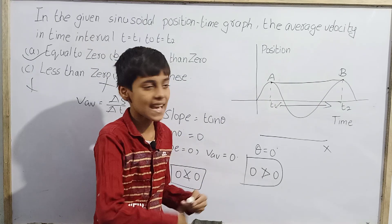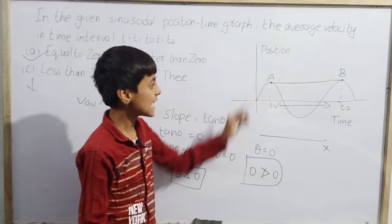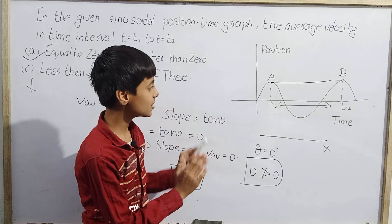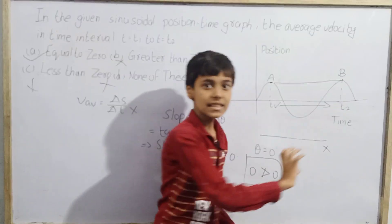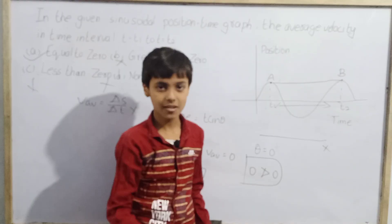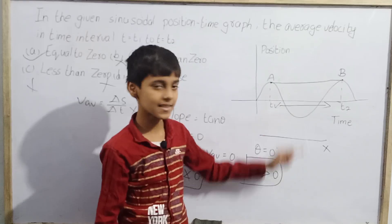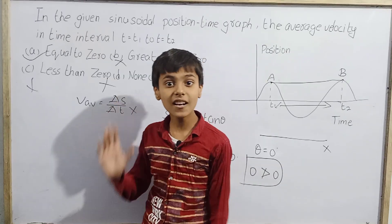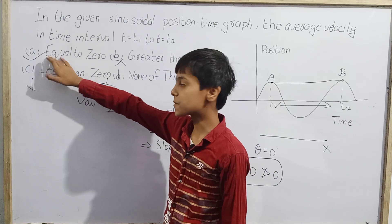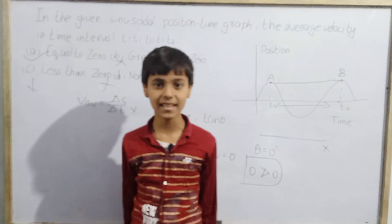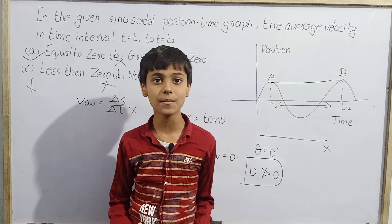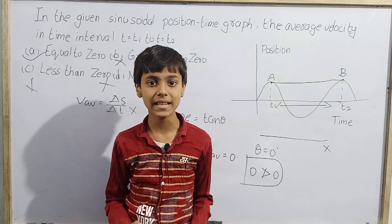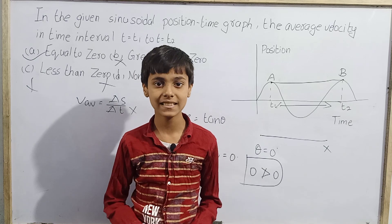So for this third question, option A — average velocity equals zero — is the correct answer. This was today's topic based on graph-type problems in kinematics. Thank you.